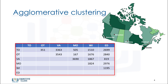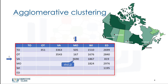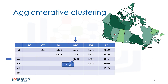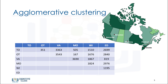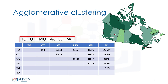We construct a distance matrix at this stage, where the number in row i, column j is the distance between cities i and j. This table shows the distances between each pair of cities. The algorithm is started by assigning each city to its own cluster, so if we have six cities, we have six clusters, each containing just one city. Let's note each city by showing the first two characters of its name. The first step is to determine which cities — let's call them clusters from now on — to merge into a cluster.